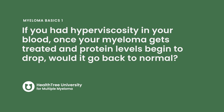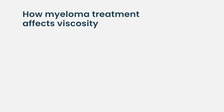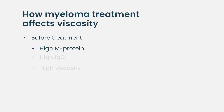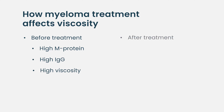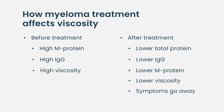If you had hyperviscosity, once your myeloma gets treated and protein levels begin to drop, would it go back to normal? Myeloma patients unfortunately do not suffer from hyperviscosity as much as Waldenström's patients do, but yes, it is directly related to the amount of protein in the blood. If someone starts out with an M protein of 8 grams and an IgG level of 13 grams, and after two cycles of induction treatment the total protein, IgG, and M protein levels go down, viscosity goes down and the symptoms go away.